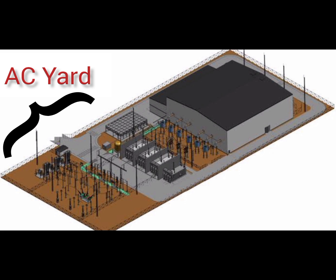Purpose: connects the HVDC station to the AC grid, provides voltage transformation and switching capabilities, and filters out harmonics and other disturbances to prevent interference with the AC grid.